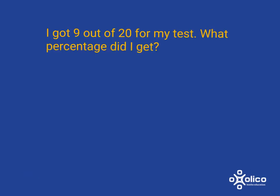Here's our first example. I got 9 out of 20 for my test. What percentage did I get? This is as simple as turning a fraction into a percentage, because what did I get? I got 9 out of 20 — it's a fraction. I just need to turn that fraction into a percentage, and you know very well how to do that. You multiply by 100 percent.